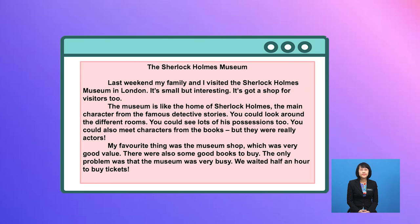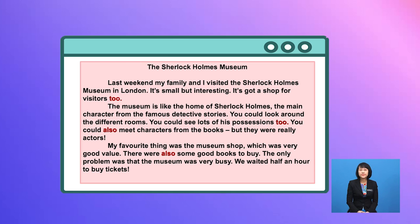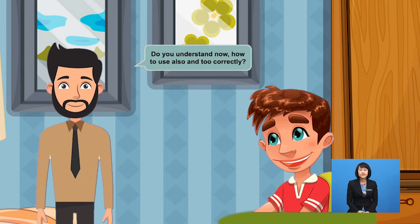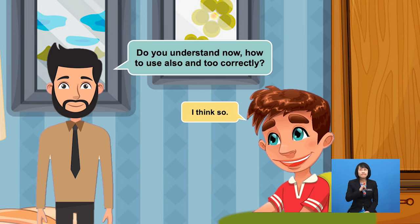Okay Yusuf, look at the review again. Find more examples of sentences with 'also' and 'too'. I found four. Do you understand now how to use 'also' and 'too' correctly? I think so.